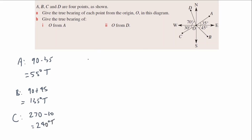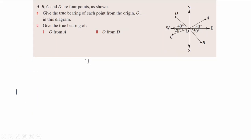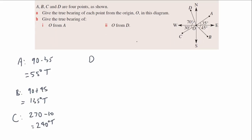The last one, the bearing of D — D is on the top left. If I do a full revolution that'll be 360, and it's just shy of 360. Once again, I know that's 270, so I can find that by doing 270 plus 70, because it's 270 all the way from north to west and 70 degrees more than west. That gives me a value of 340 degrees true.